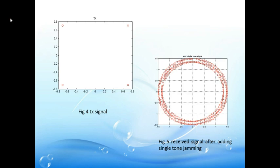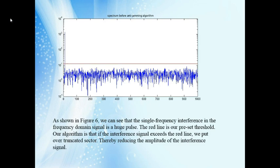Here are the two pictures. Figure 4 is the test signal and figure 5 is the received signal after adding single-tone jamming — there is much difference. In this figure, we can see that the single frequency interference in the frequency domain signal appears as a large spike. The right line is our preset threshold. Our algorithm states that if the interference signal exceeds that threshold, we clip the affected sector, thereby reducing the amplitude of the interference signal.